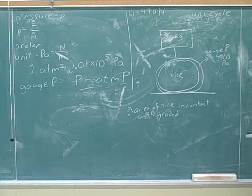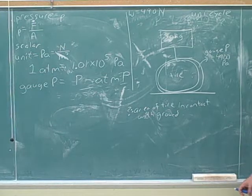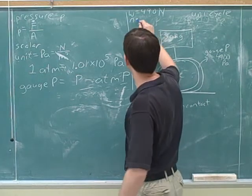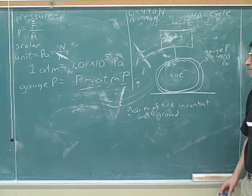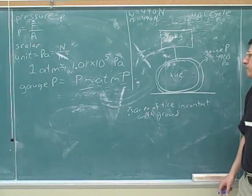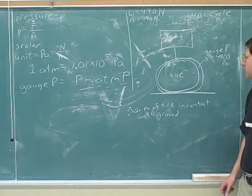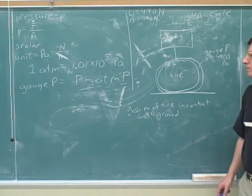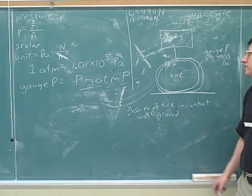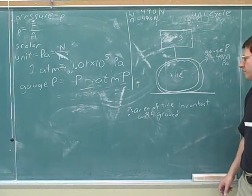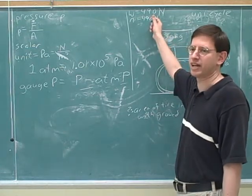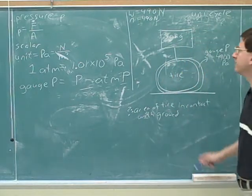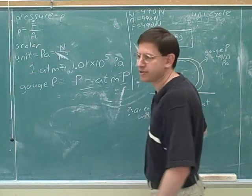The normal force is 490 Newtons, because it must balance the weight. The ground is pushing on the tire with 490 Newtons. According to Newton's third law, if the ground is pushing on the tire with 490 Newtons, the tire is pushing on the ground with the same force — 490 Newtons. So all the forces in this problem are 490 Newtons.